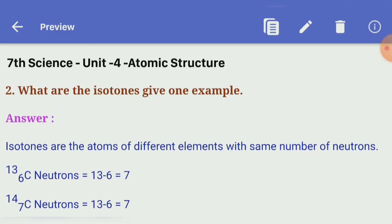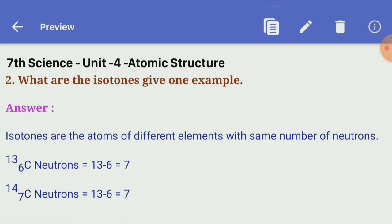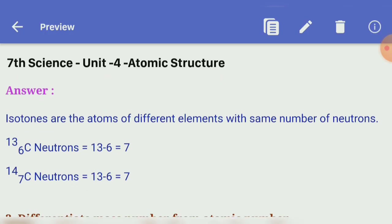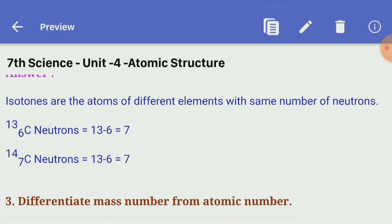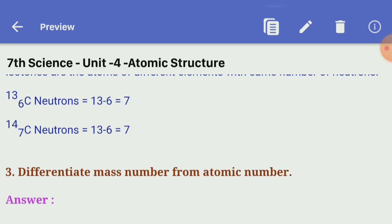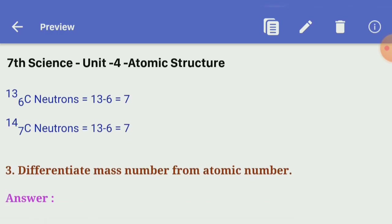Second question: what are isotones? Give one example. Isotones are atoms of different elements with the same number of neutrons. Example: Carbon-13 (¹³₆C) has neutrons = 13 − 6 = 7. Nitrogen-14 (¹⁴₇N) has neutrons = 14 − 7 = 7. Both have 7 neutrons, so they are isotones.